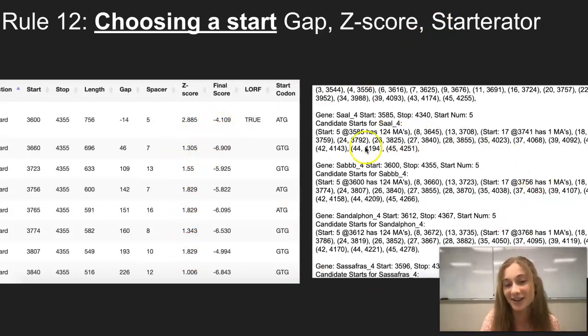And for starter rate, here's a screenshot of starter rate. In this example, we're looking at the gene SOB. And the start of 3,600 has the most manual annotations compared to all the other starts. The start with the most manual annotations has the best evidence in why it should be chosen compared to the other starts.